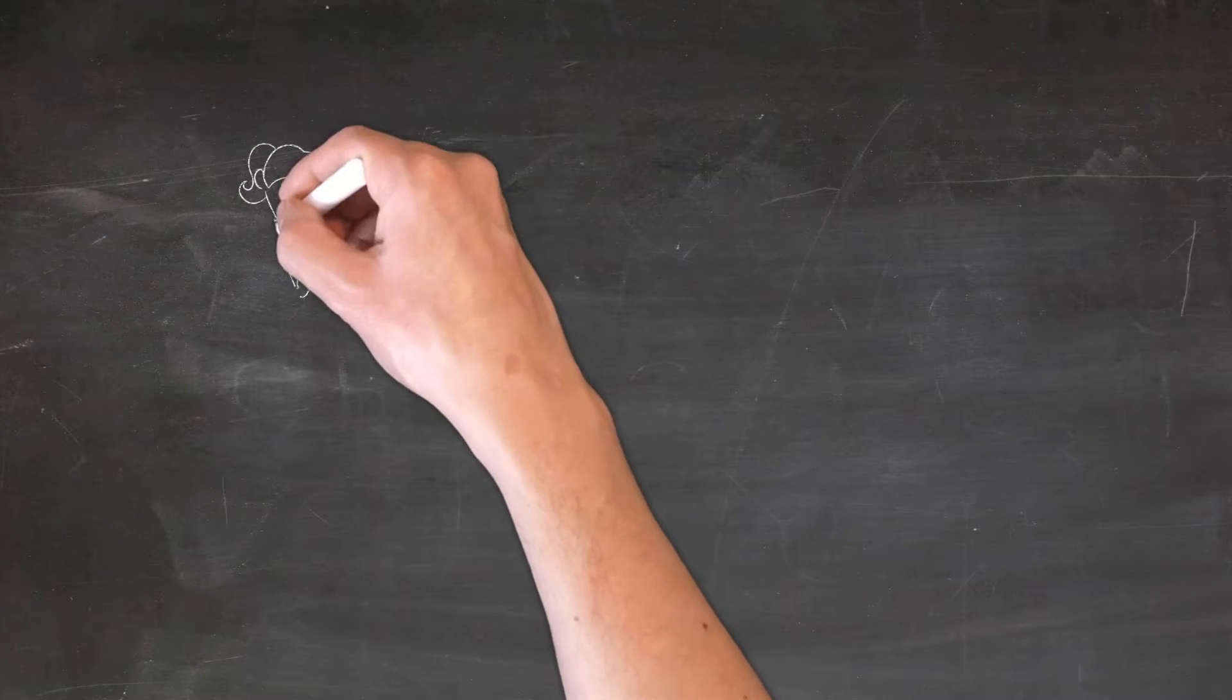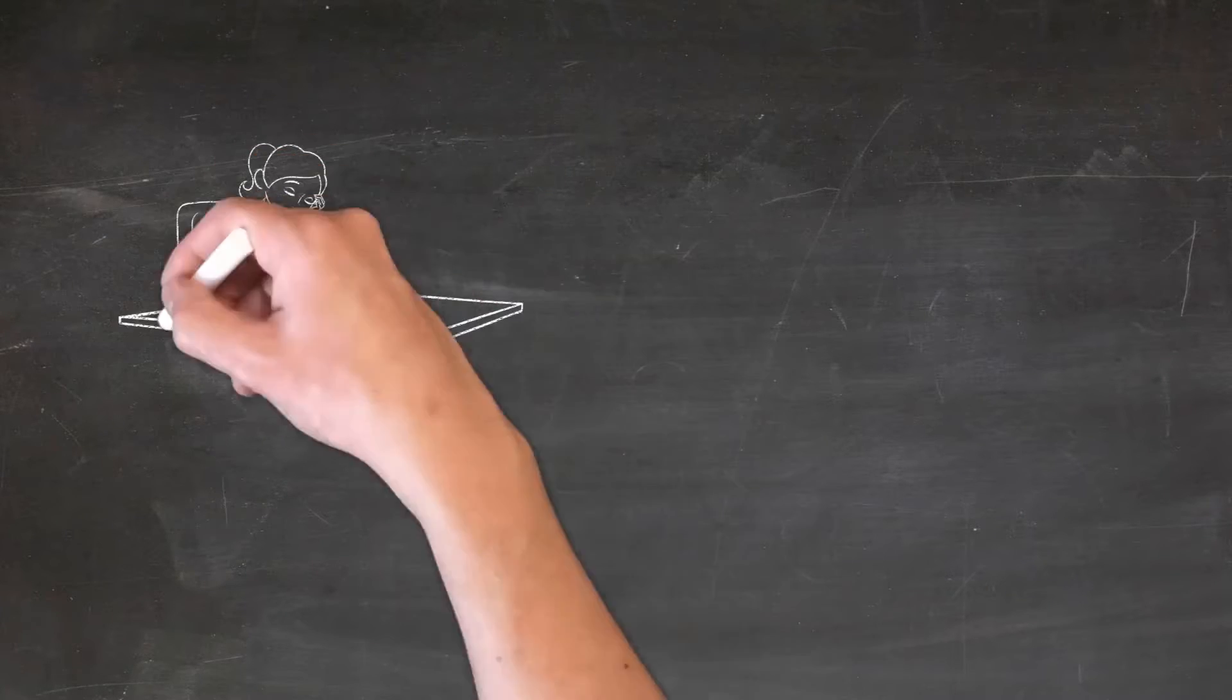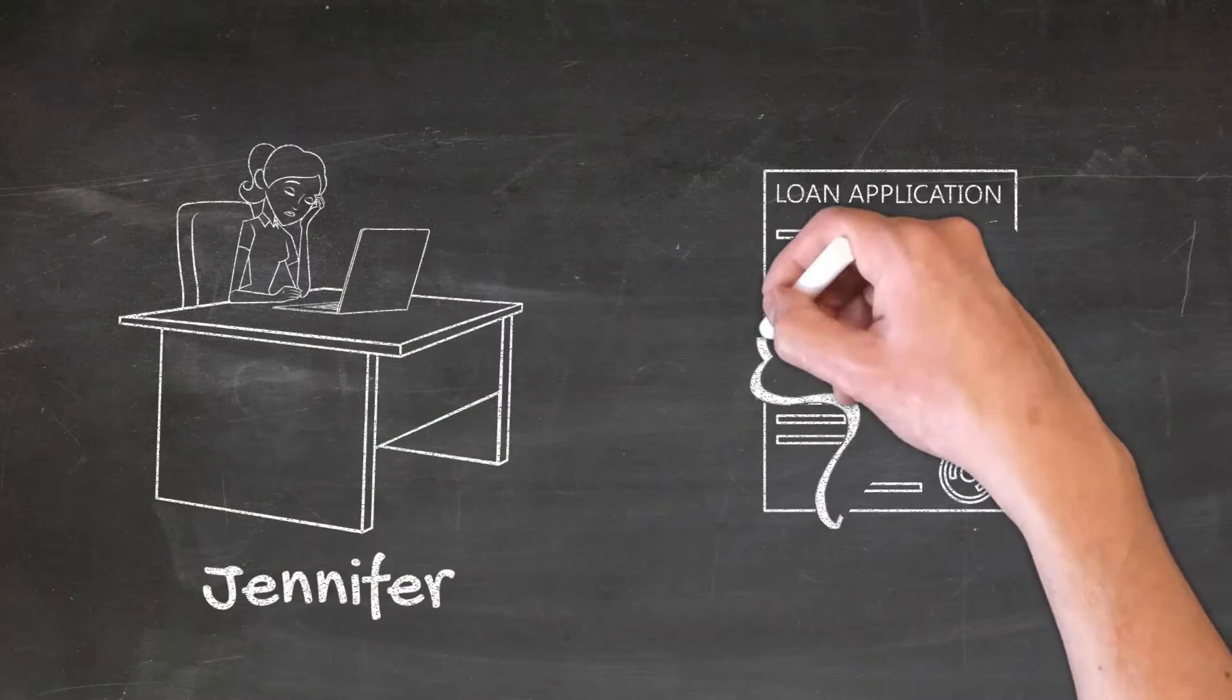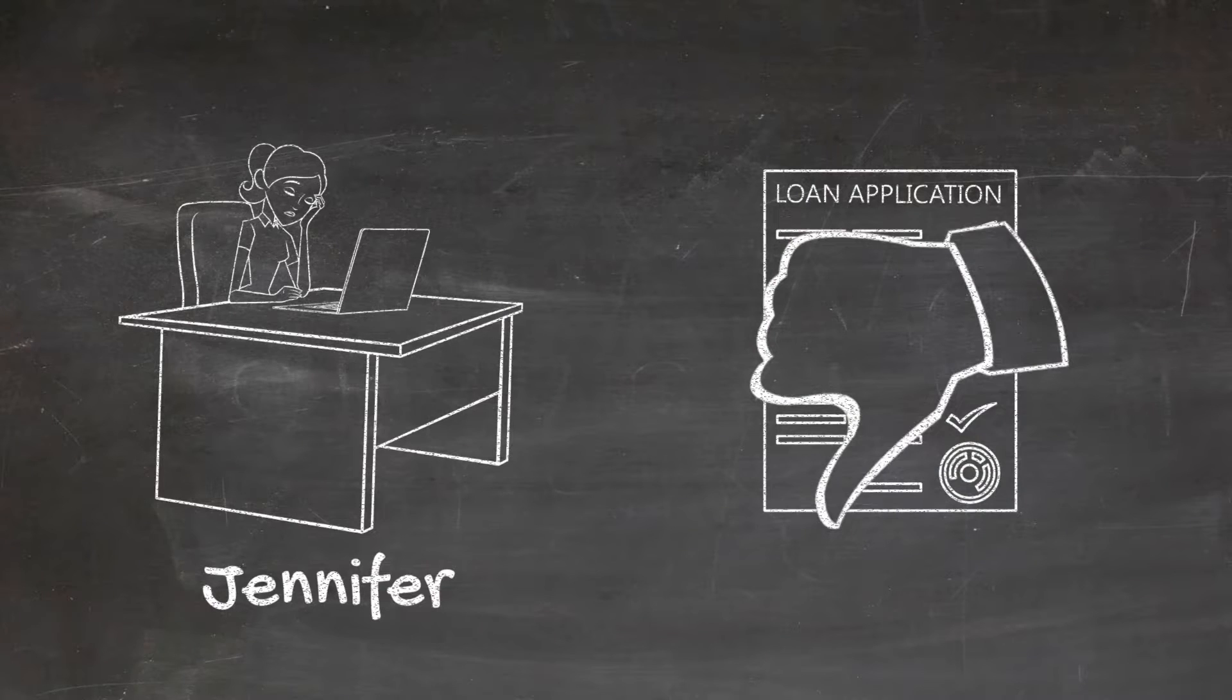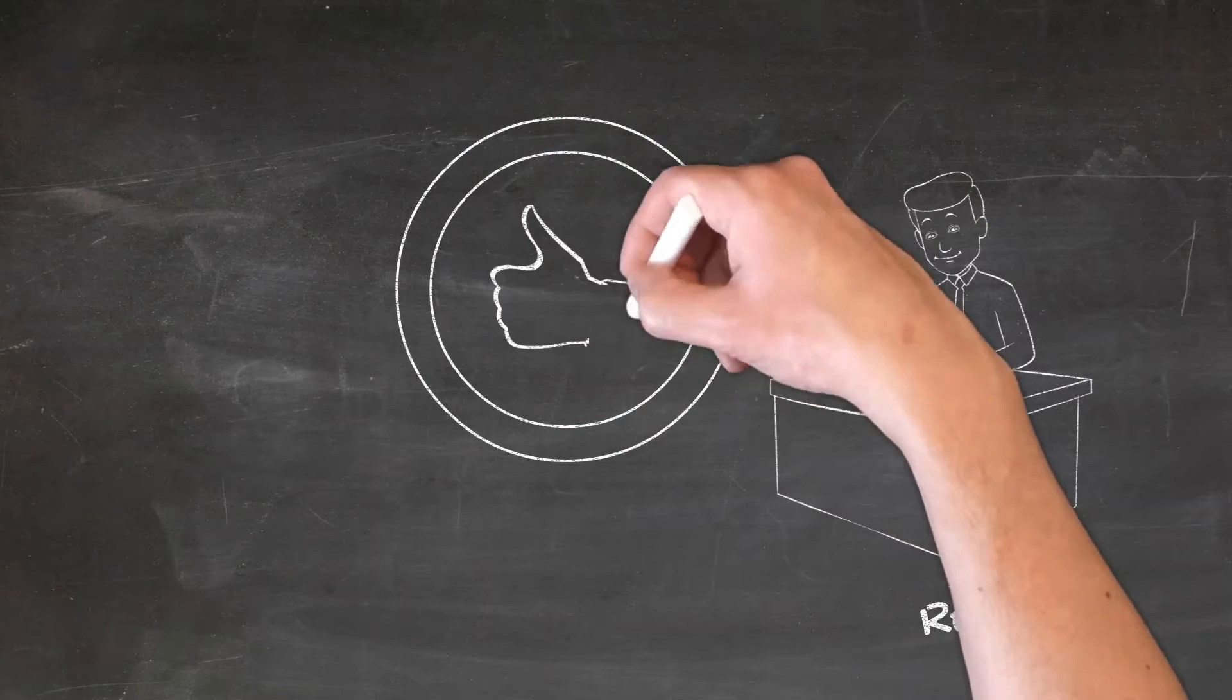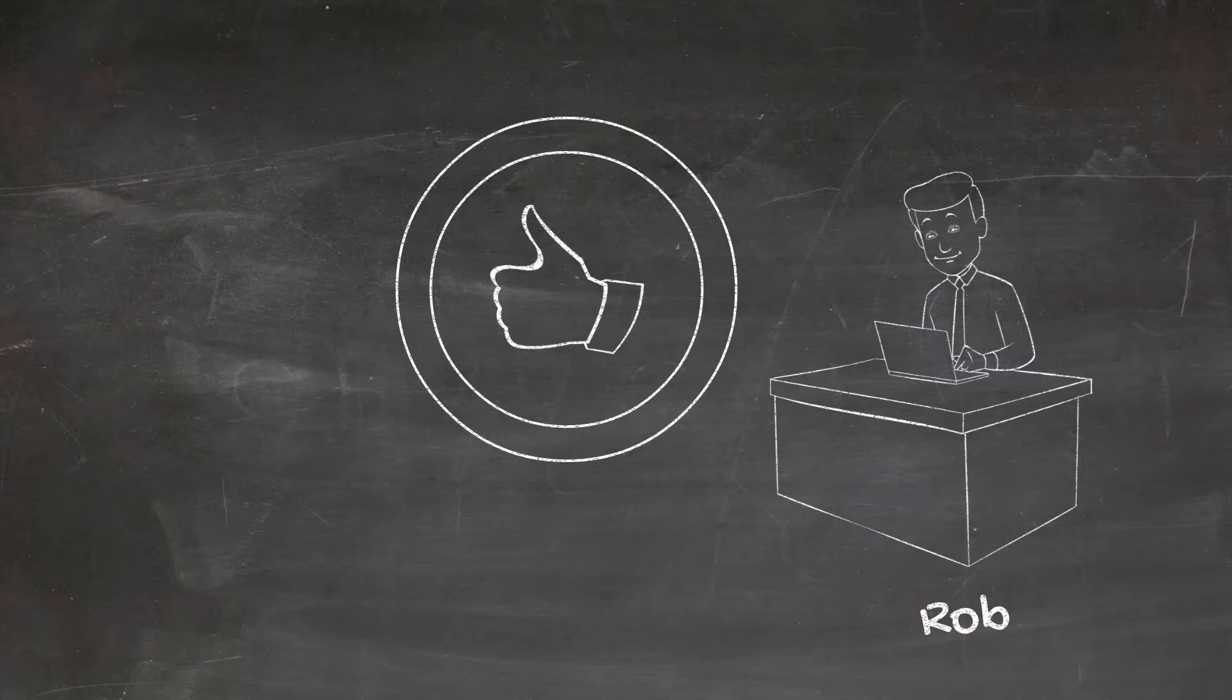Jennifer is a dissatisfied customer of Bank One. She raised a complaint about a mortgage loan modification request that was denied due to negative NPV. Rob from Bank One investigates the complaint and reverts with a solution.